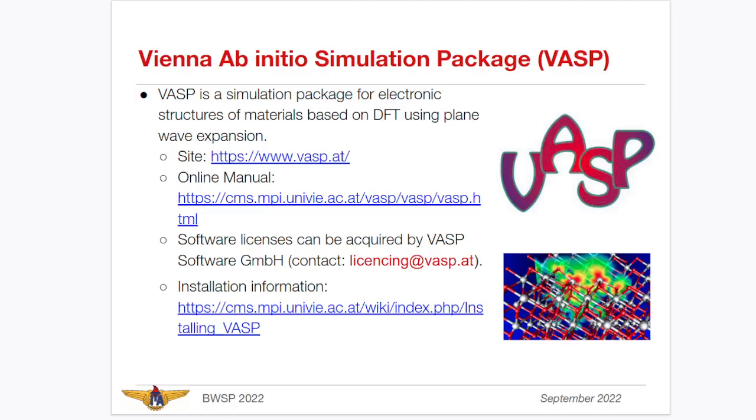There are many codes that have density functional theory implemented. I'm going to use, on this video, Vienna Ab Initial Simulation Package, known as VASP. This is the most popular DFT code. It uses plane waves, so this is especially interesting if you're interested in calculating crystal materials or other periodic systems.